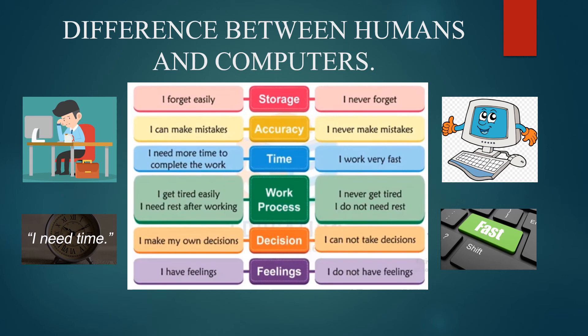The fifth point is decisions. Humans can make their own decisions — like deciding what to learn today. The computer says it cannot make decisions on its own. We humans operate the computer, so it can't make decisions by itself. The sixth point is feelings. Humans have feelings — if we hurt ourselves, we feel pain. If the computer falls down, it doesn't feel anything.